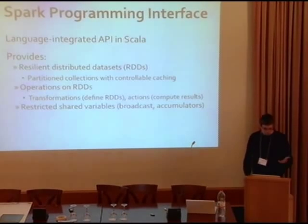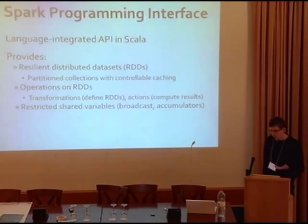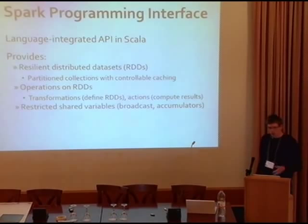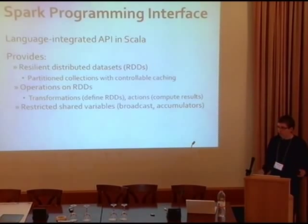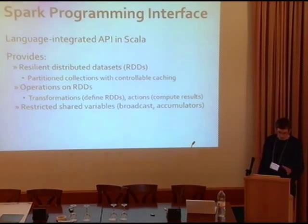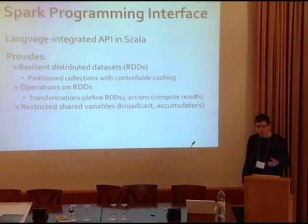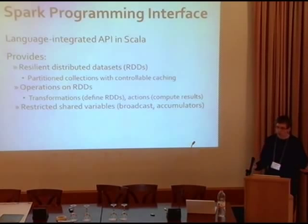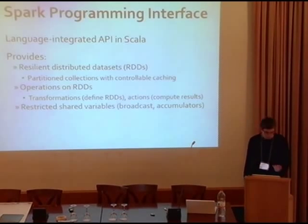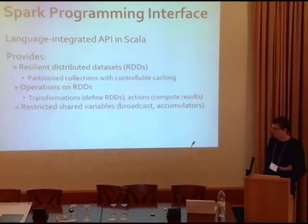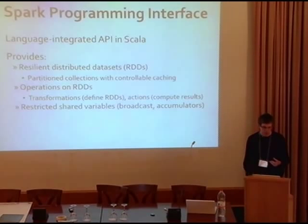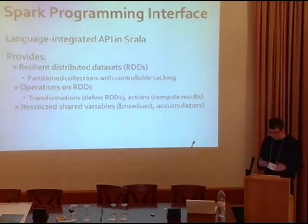One of the cool things in Spark is that we've built the API inside the Scala language. Scala is a functional and object-oriented language for the JVM — it looks a lot like Java. This lets you run operations like map and reduce and write functions right there as if you were doing functional programming locally — a very concise interface. In the API, you get RDDs, which look like collections in Scala except distributed across the cluster. You can tell Spark which RDDs to keep in memory — we call that caching. You get transformations, which build a new RDD, and actions, which compute a result and return it. You also get special shared variables useful for some tasks.